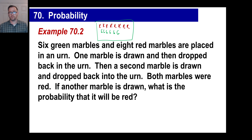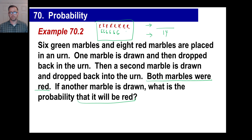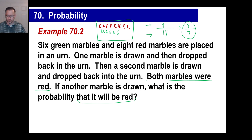The fact that both marbles were red is just extra information — we don't care what happened before. We're talking about the probability that the next draw will be red. The fraction is: positive outcomes on top, possible outcomes on the bottom. There are eight reds and six greens, giving 14 total. So it's eight out of 14, which reduces to four out of seven.